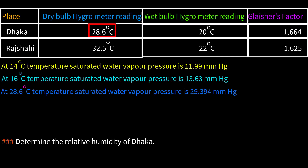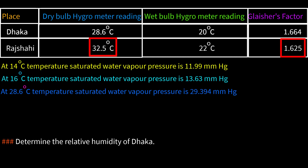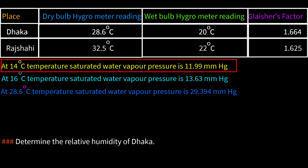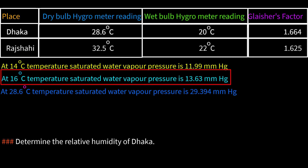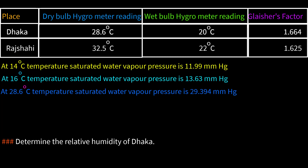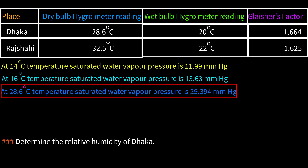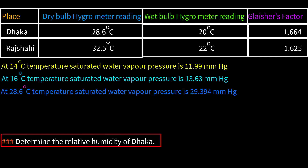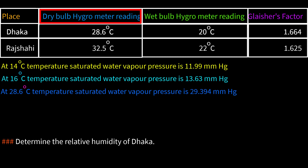Looking at the stimulus: we have the dry bulb temperature and wet bulb temperature for Dhaka and Rashtrahi, along with the Glacier's factor. The given data states: at 14°C, saturated water vapor pressure is 11.99 mmHg; at 16°C it is 13.63 mmHg; and at 28.6°C it is 29.394 mmHg. We are asked to determine the relative humidity of Dhaka.